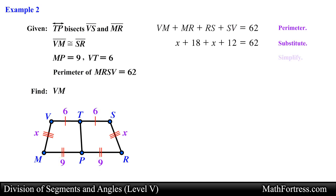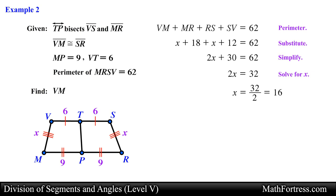Now we solve for x by collecting like terms, subtracting the constant, and dividing both sides by 2. We obtain x equals 16. Since this value of x represents the length of segment VM, we are done — segment VM equals 16 is our final answer.